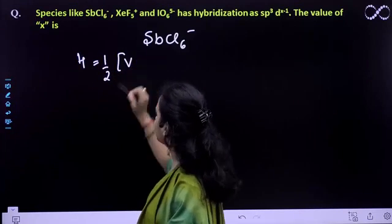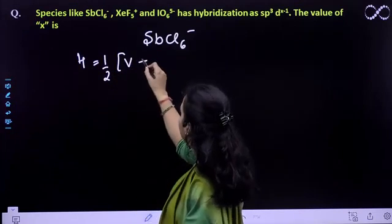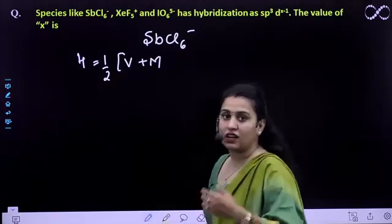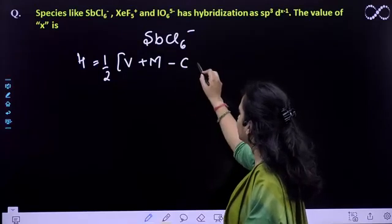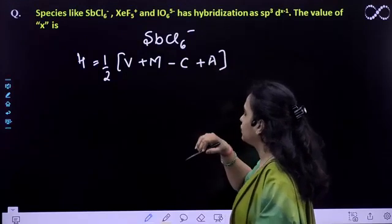Half of valence electrons of the central atom plus the monovalent atoms attached to it, how many number of monovalent atoms are attached to it, minus the cationic charge and plus the anionic charge.